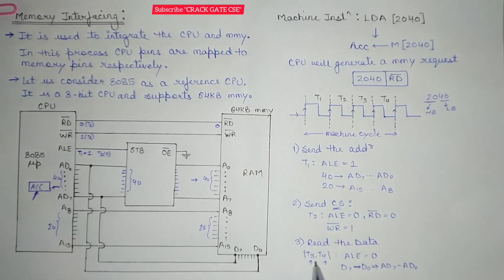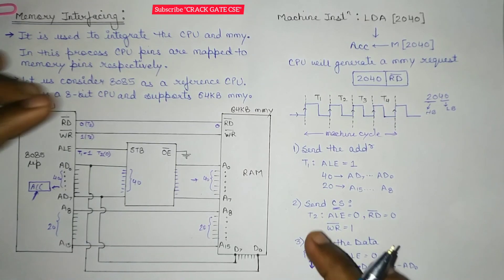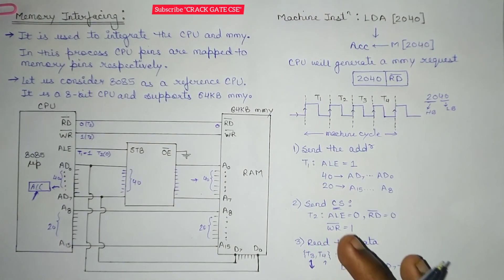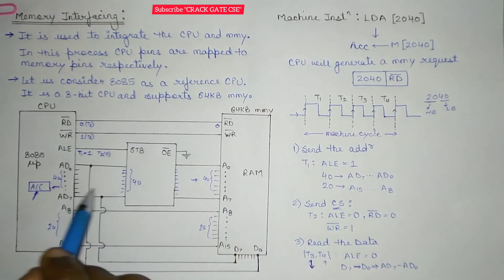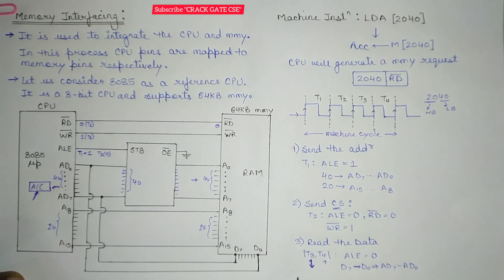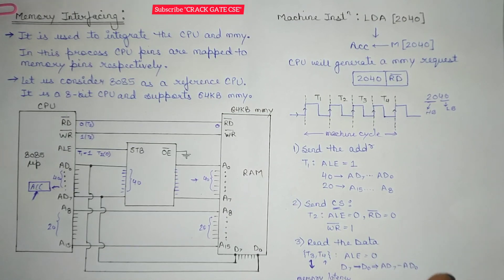We are taking two machine cycles here because to process the data, the memory takes some time — we have to retrieve the data from memory and send it back to store in the accumulator. T3 is for memory latency or delay, and at T4 the data will be stored. This is how memory interfacing works and how it integrates the CPU and the memory.